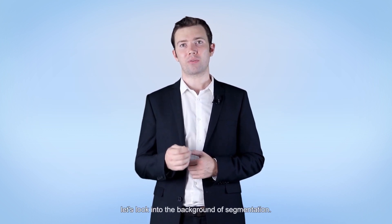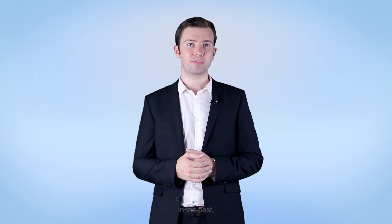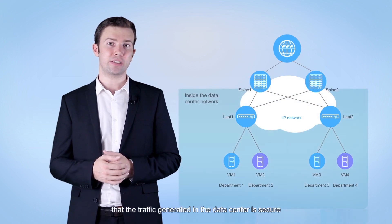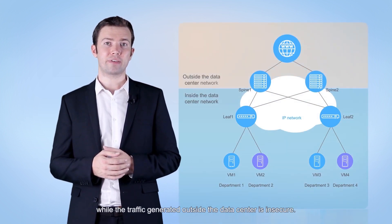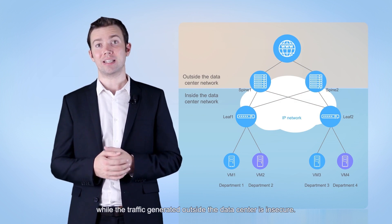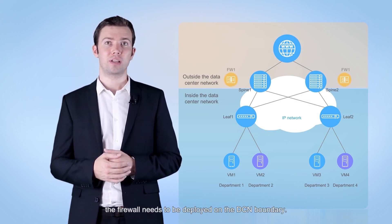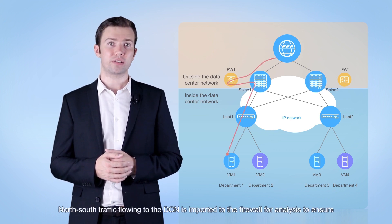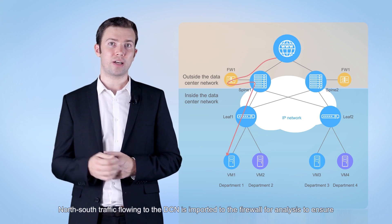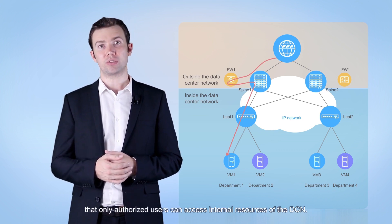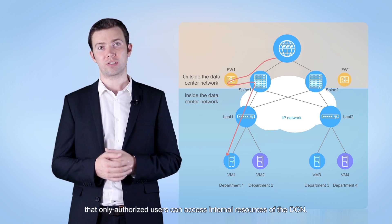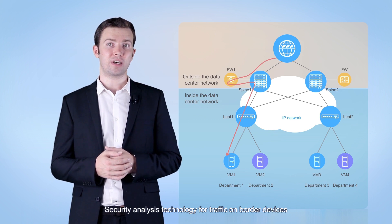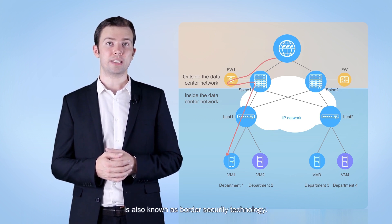First, let's look at the background of segmentation. In the past, our security policy was based on the idea that traffic generated in the data center is secure, while traffic generated outside is insecure. Therefore, the firewall was deployed on the DCN boundary. North-south traffic flowing to the DCN is imported to the firewall for analysis to ensure only authorized users can access internal resources. This is known as border security technology.